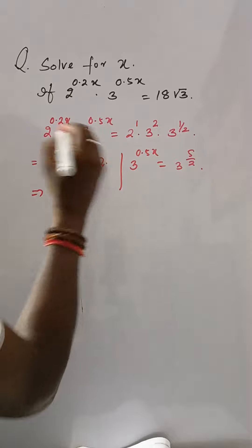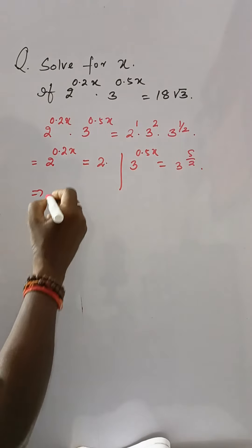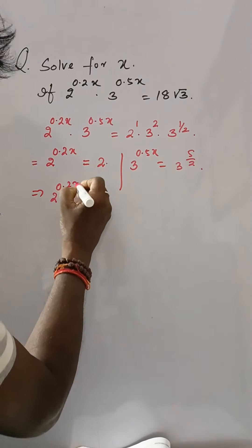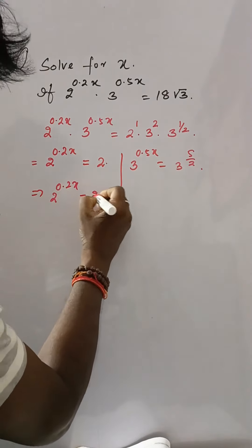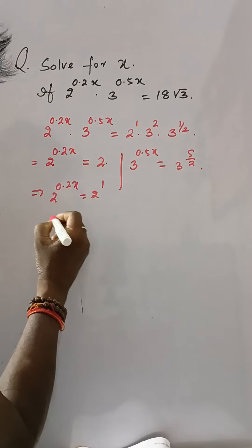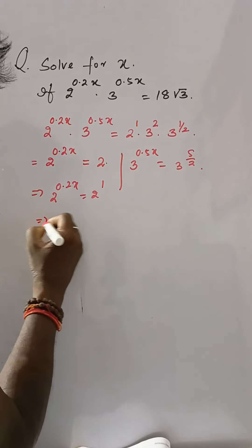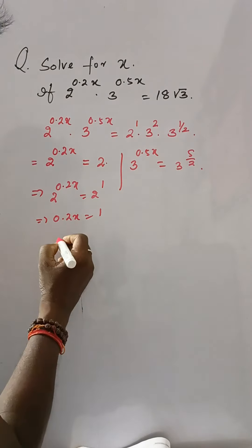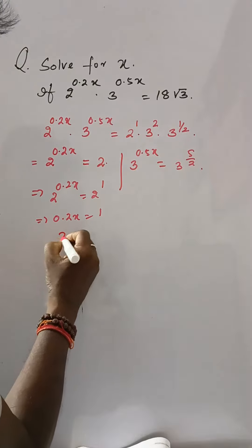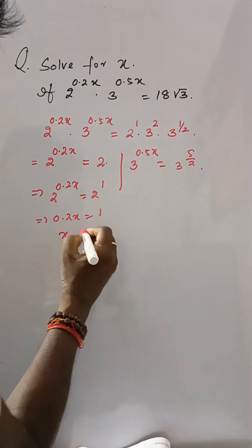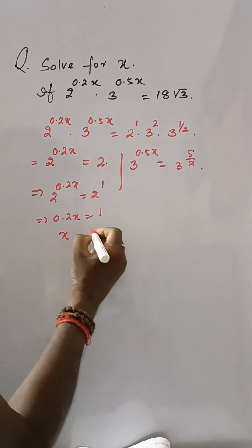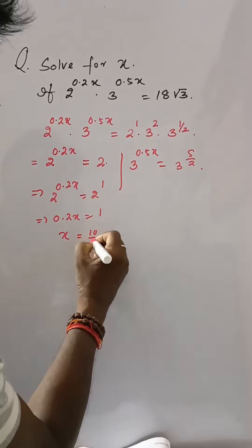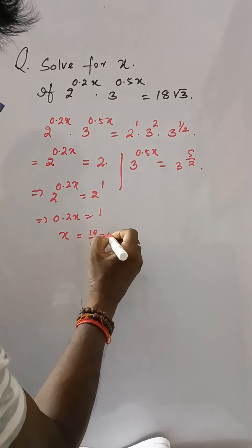Now comparing: 2 to the power 0.2x is equal to 2 to the power 1. Then 0.2x is equal to 1, so x is equal to 10 by 2, which is 5.